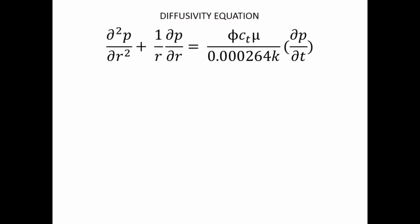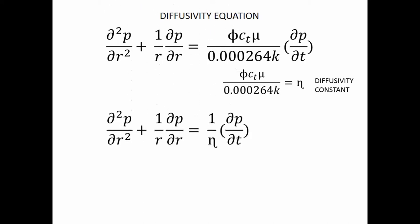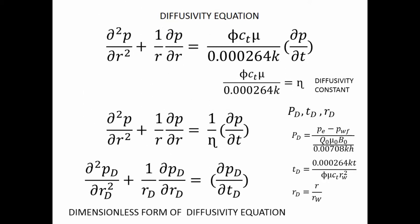So, here we have the diffusivity equation, where the diffusivity constant is equal to phi mCt over 0.000264k. The terms of dimensionless pressure, dimensionless time, and dimensionless radius is then substituted into this diffusivity equation to produce dimensionless form of diffusivity equation.